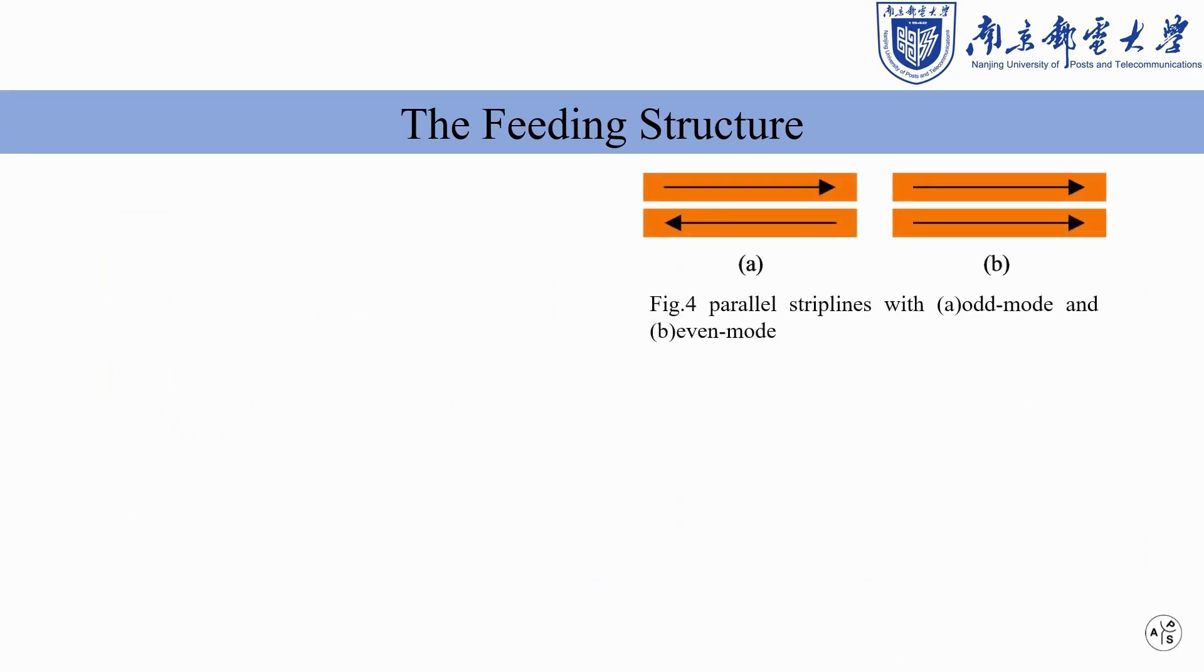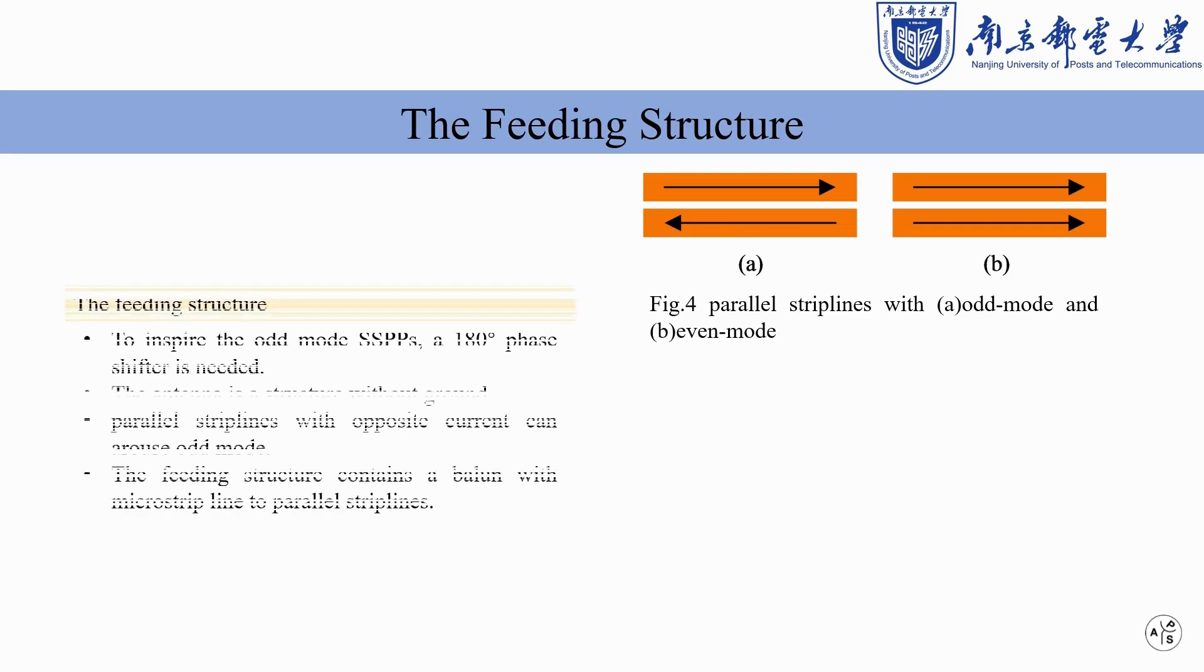To excite the odd-mode SSPPs, a 180-degree phase shifter is needed, because the antenna is a structure without ground and considering that parallel strip lines with opposite current can arouse odd-mode, the feeding structure contains a balun with microstrip line to parallel strip lines.